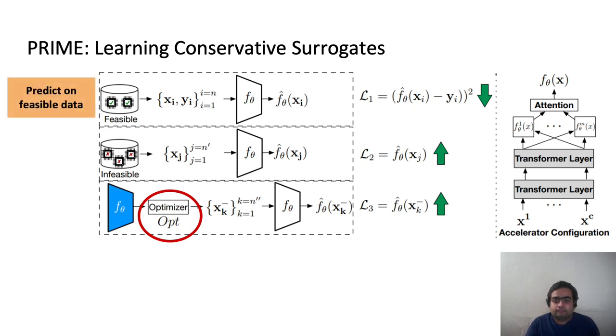The first loss term is that it trains the surrogate model, which is denoted as f_theta(x) in this figure, to first of all predict the latencies on the dataset, which has the latency annotations, so on the feasible part of the dataset.